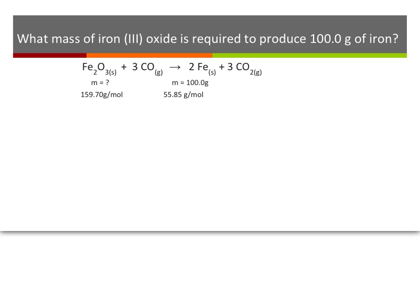Here again we're going to do the exact same four steps. Step one is the balanced chemical equation, which I've given here. Underneath it, I've written down what I know, my question mark, and my conversion factors — my molar masses, since I'm going from grams to moles. The question gives me 100 grams of iron. I'll do proportions first; fast forward if you want unit analysis.